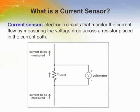A current sensor is the electronic circuit that monitors the current flow by measuring the voltage drop across a resistor placed in the current path. Although other technologies exist, such as magnetic, everything discussed in this module is limited to shunt resistor current measurement. The current sensor outputs either a voltage or current that is proportional to the current through the measured path.